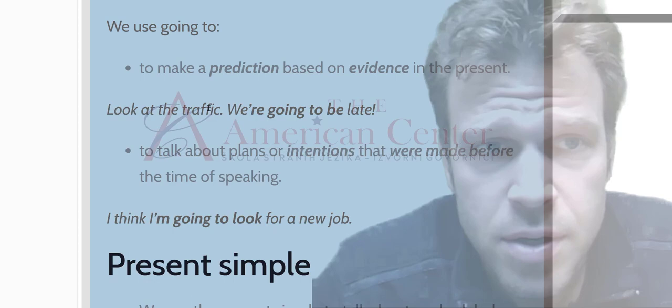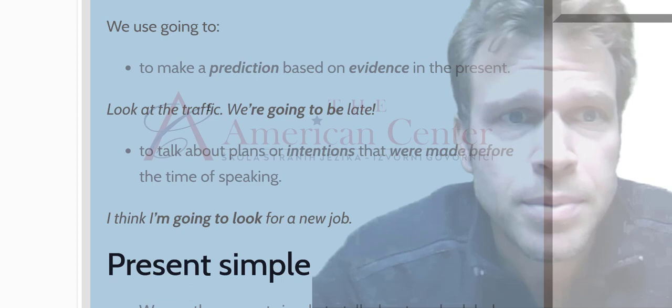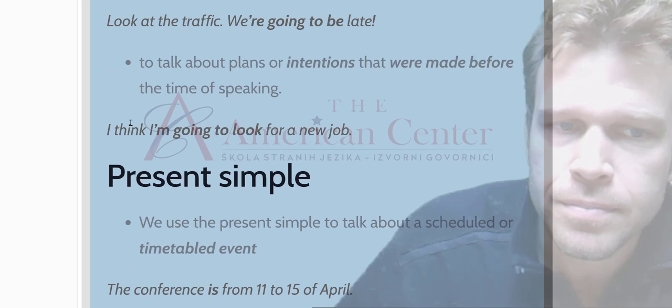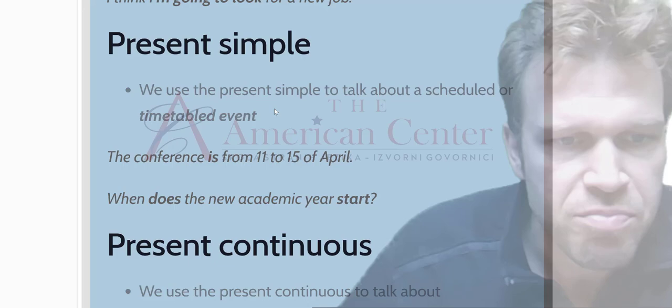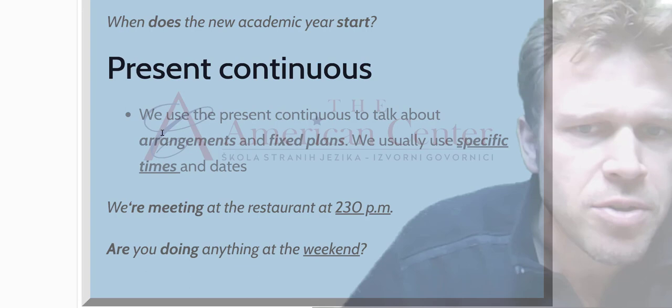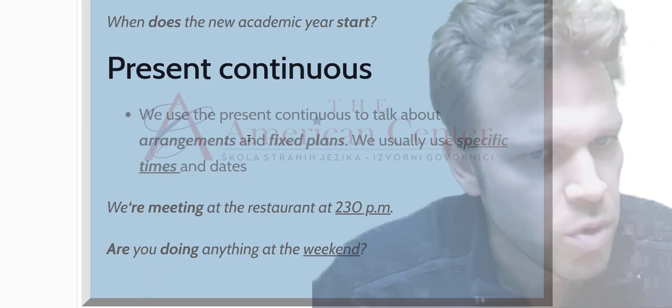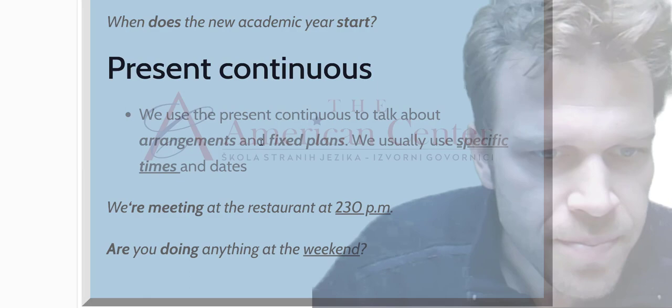Look at the traffic. We're going to be late. Look. It's evidence. In front of us, there is a jam, so we will inevitably, inevitably be late. So, present simple, timetables, pretty simple stuff. Now, again, present continuous, as we mentioned, okay, we use present continuous to talk about arrangements and fixed plans. We usually use specific times and dates. We're meeting at the restaurant at 2:30. Exactly what we said, right? So, that's it.